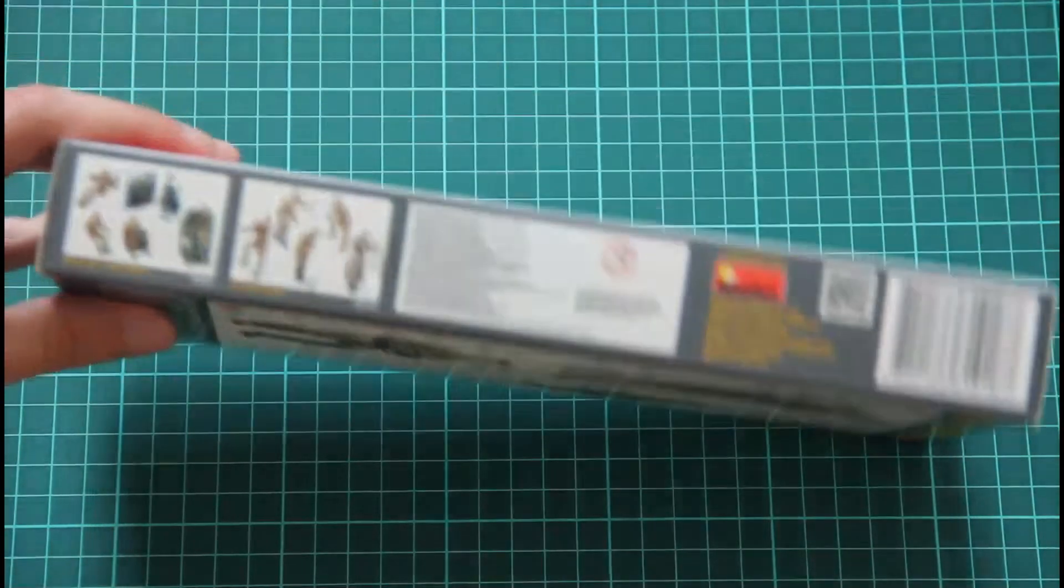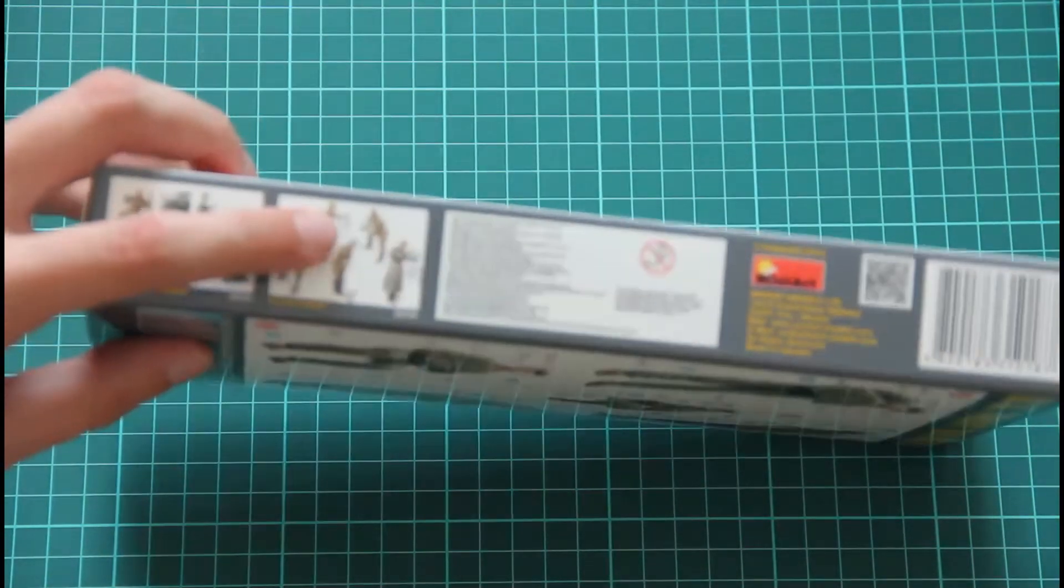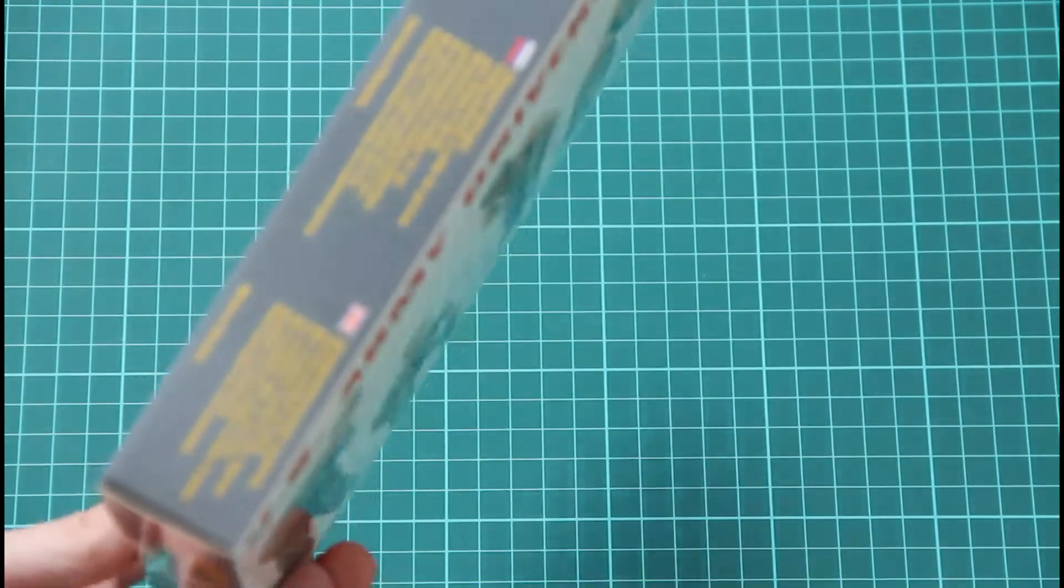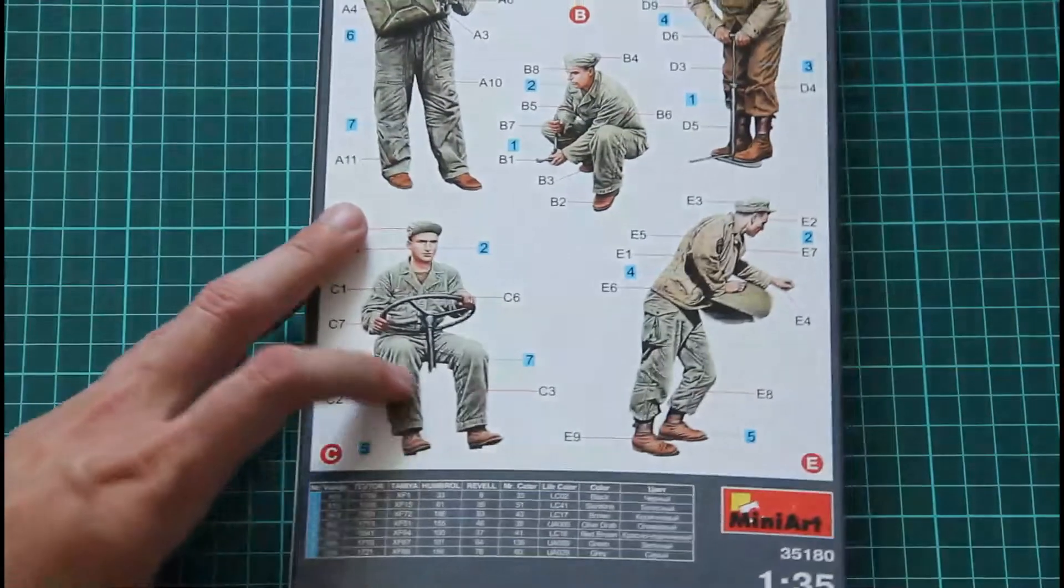Then on the sides we have some information about other available kits. Some information about the kit itself. Here we have a painting guide.